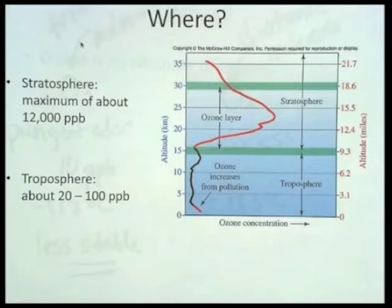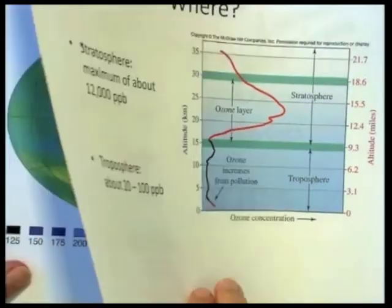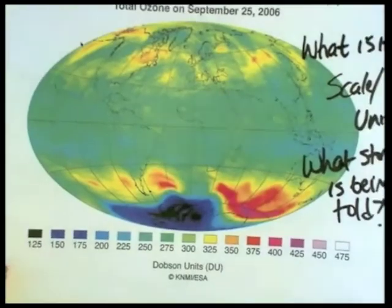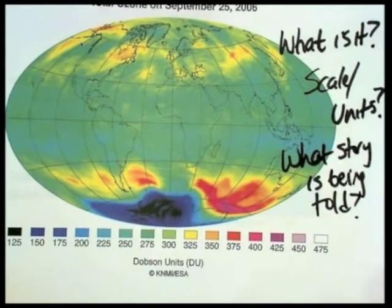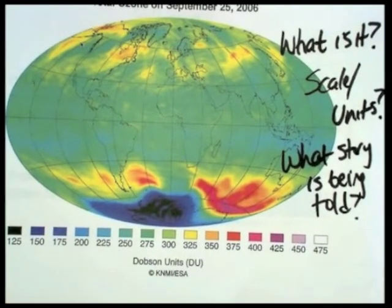Now, compare this to that first picture that you looked at. And I wanted you to answer some questions about what are we looking at here, what's the scale, what's the story behind this particular picture. And in this picture, what you have is images of how the concentration of ozone varies across the whole world. So this is looking across the world, whereas this other graph was looking at altitude, the different ozone concentrations at different altitudes.